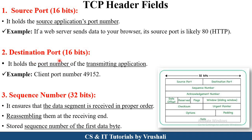The next field is the destination port. The size of destination port is also 16 bits. Destination port holds the port number of the receiving application. Every computer and every system has its own port number. Consider that the client port number is 49152. By using the ipconfig command you can look up your port number. So this is the source port number and this is the destination port number.